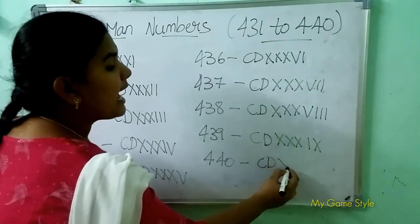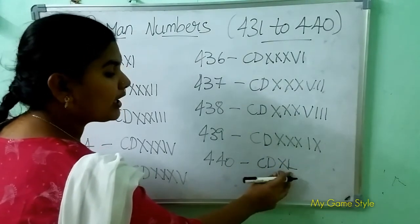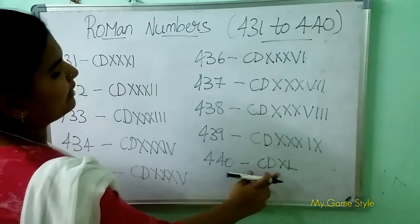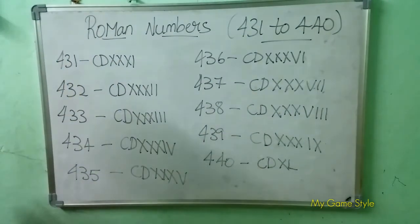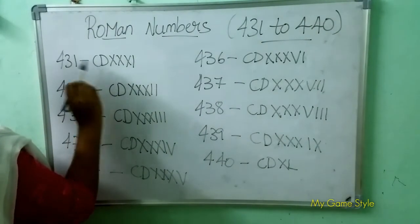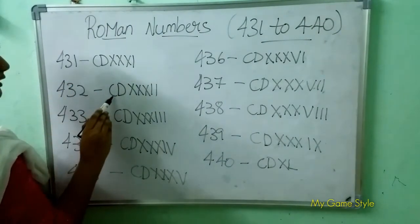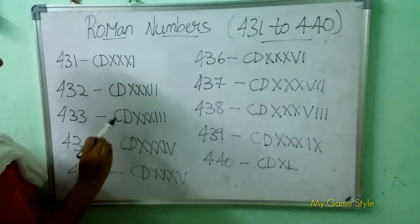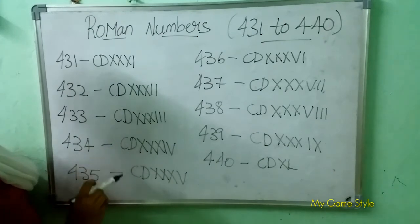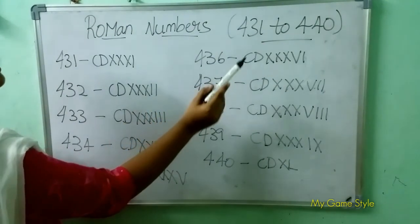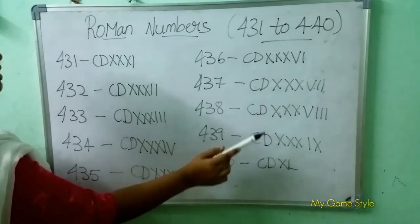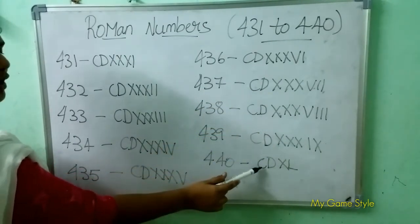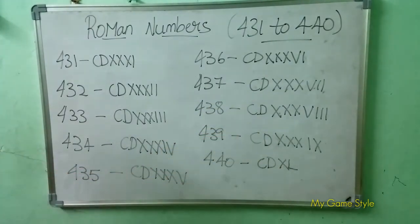439 means IX is 9, so this means 439. Next, 440 — how to write 440? CD is 400, XL is 40. So this means 440. Now read with me: 431, 432, 433, 434, 435, 436, 437, 438, 439, 440. Thank you for watching this video.